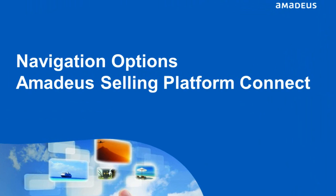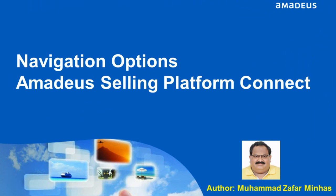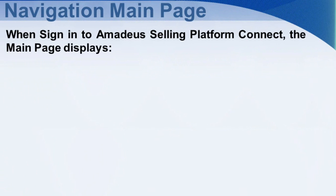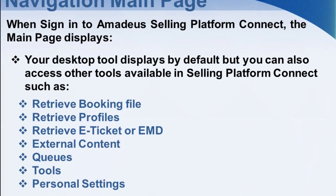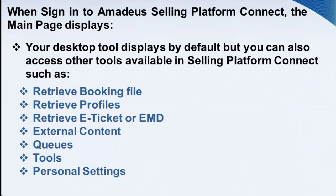This video tutorial is for Amadeus Selling Platform Connect, covering Navigation Options. When signed in to Amadeus Selling Platform Connect, the main page displays your desktop tool by default. But you can also access other available tools in Selling Platform Connect, such as Retrieve Booking File, Retrieve Profiles, Retrieve Electronic Ticket, EMD, External Content, Queues, Tools, and Personal Settings.